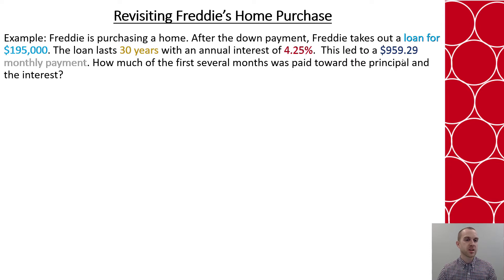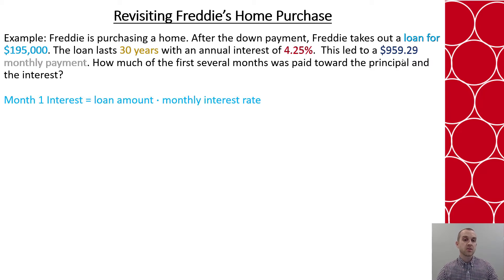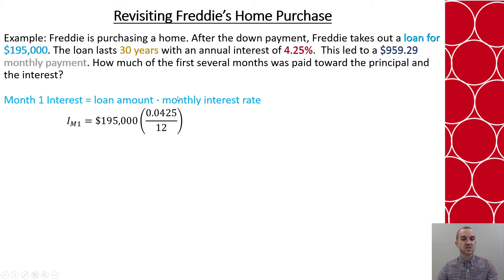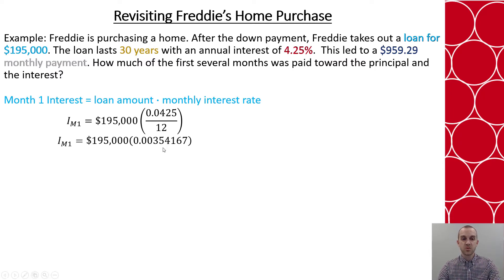So we have all that information to help us understand. First, we think about how much do we actually pay in interest each month. Let's start at the beginning, in month one. If we want to know how much interest, we start with our loan and multiply it by the monthly interest rate. We know our annual interest, so to get our monthly interest, we divide by 12. So if I divide 4.25% in its decimal form by 12, and then multiply by $195,000, that will tell me how much interest is paid in that first month, and that's a lot of what the monthly payment is.